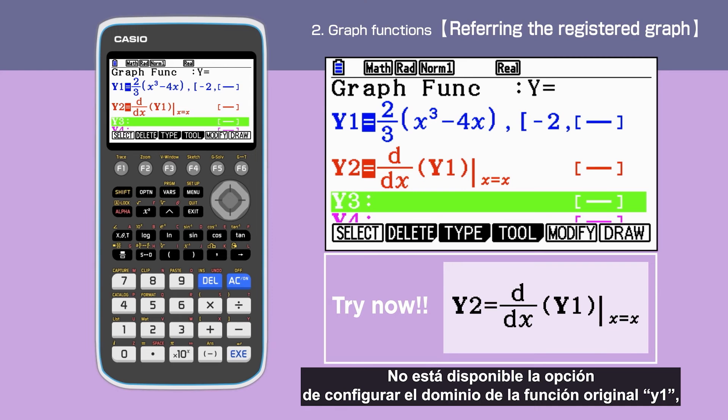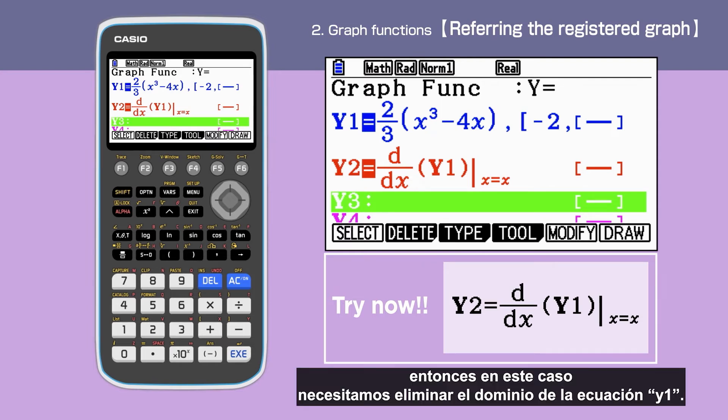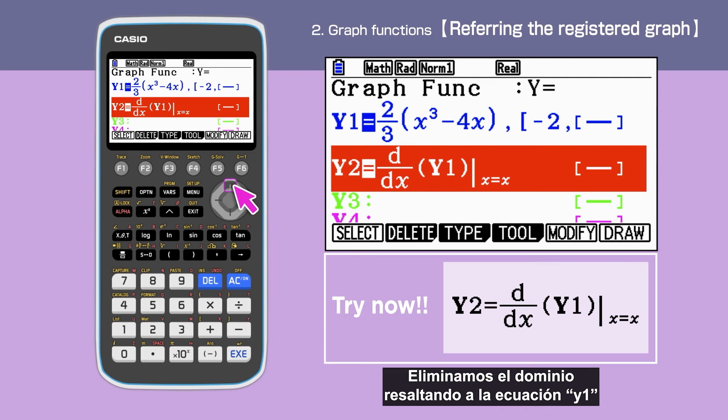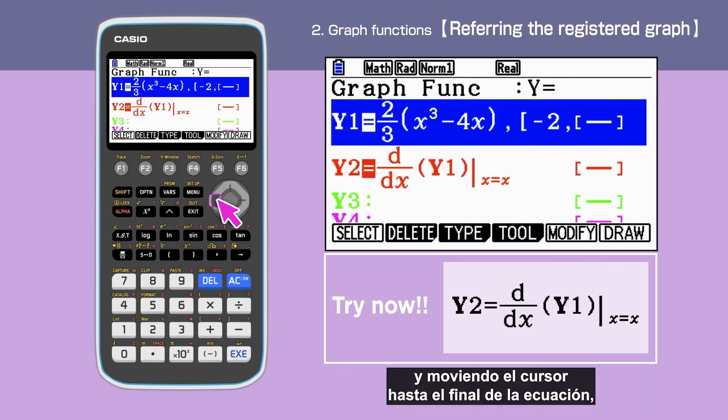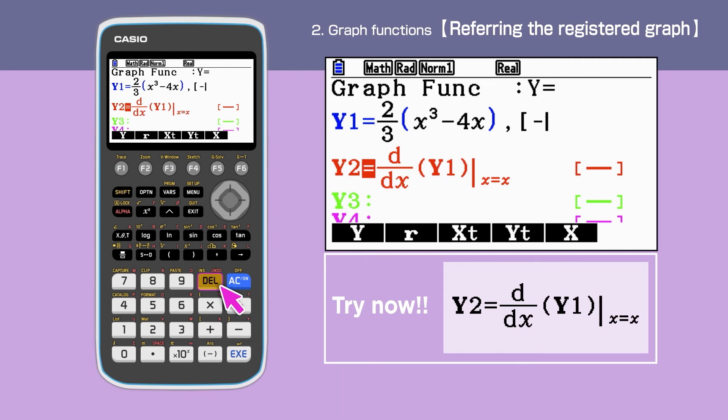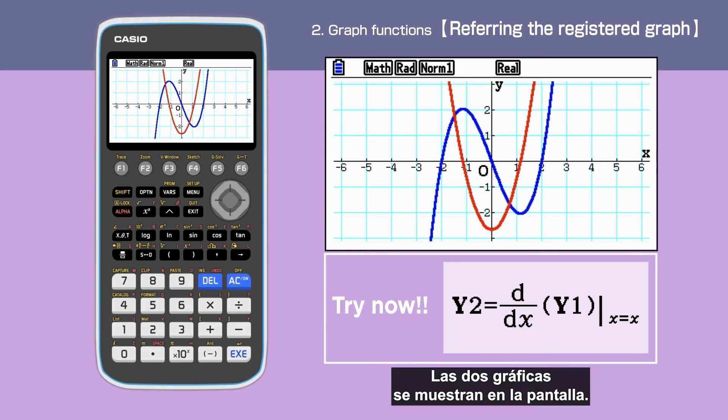We are not able to set the domain of the original function y1 if this function is used as a substitute in y2. Therefore, in this case, we will need to delete the domain of y1. We delete the domain by highlighting y1, moving the cursor at the end of the equation and deleting. Press F6 to draw both y1 and y2 graphs. Two graphs are displayed.